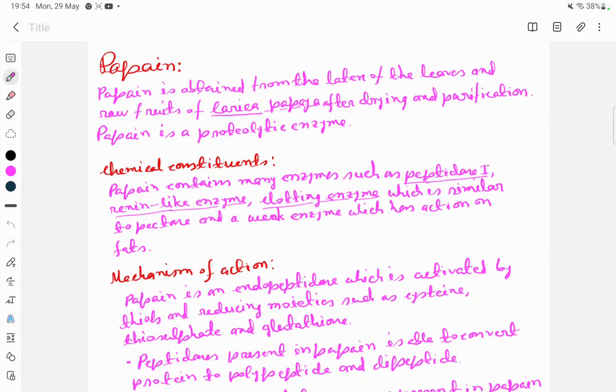Hello everyone and welcome to my YouTube channel. Today I will discuss papain. Papain is obtained from the latex of the leaves and raw fruits of Carica papaya.